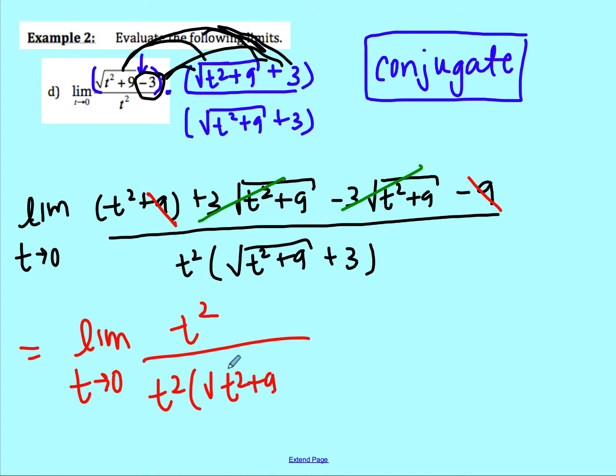Alright, so I did my simplifying. Then I always recommend plugging in what you got. If I do that, I plug in zero for t. I'd have zero squared, which is zero, and zero times whatever this is will still be zero. So, bummer, it doesn't work. Then you just see, can I simplify it further? And yes you can. You would see that these t squareds would cancel. Just remember there's a placeholder of one in the numerator. So my limit as t approaches zero, one over square root of t squared plus nine plus three.